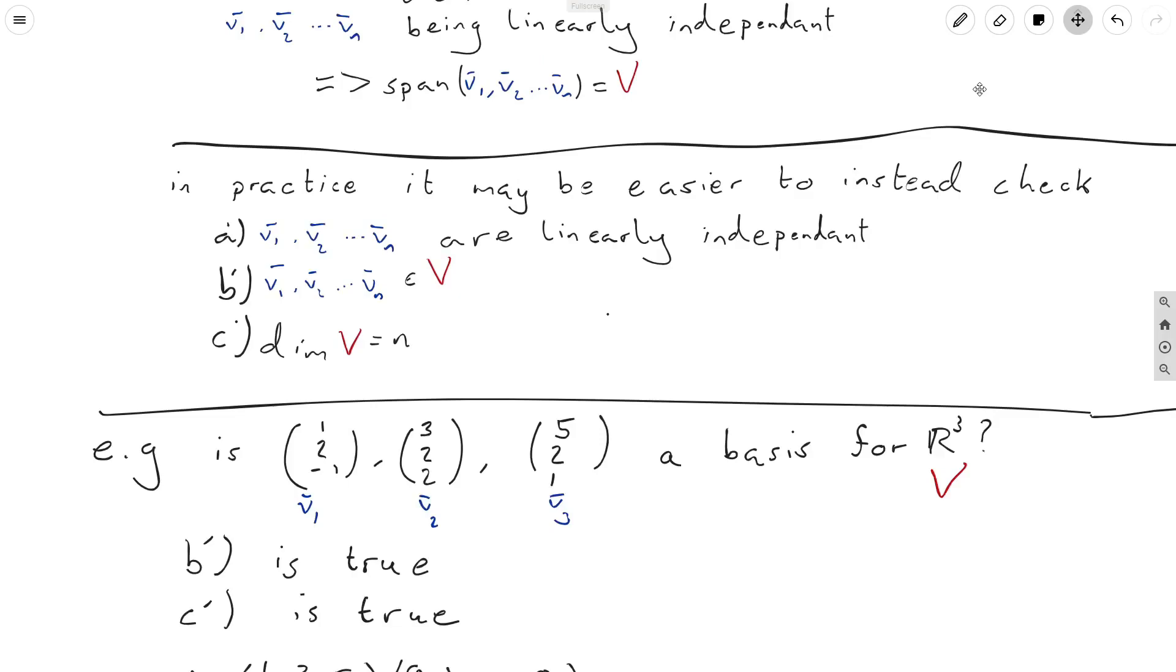Now, I've written down here that b prime and c prime are both true immediately, and why is that? Well, v1, v2, and v3 are all three-dimensional vectors, and therefore, by definition, live inside R³. So b is definitely true immediately. These three vectors are inside the vector space we're interested in.